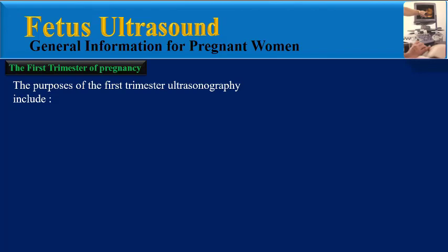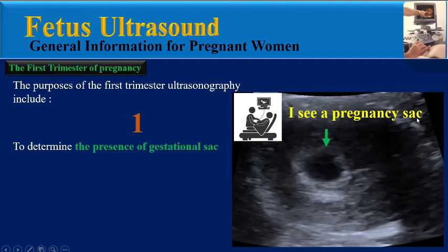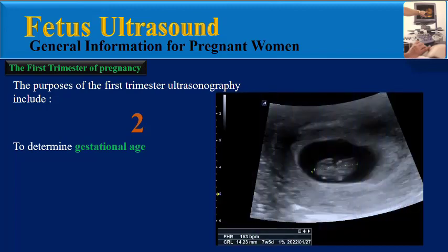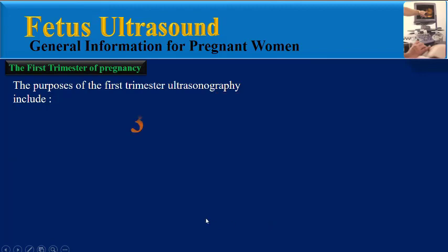The first purpose is to determine the presence of a gestational sac, like this image in which the physician reports: I see a pregnancy sac in the womb. The second purpose is to determine the gestational age, like this image where we can see the fetus and the physician reports: gestational age is seven weeks and five days.